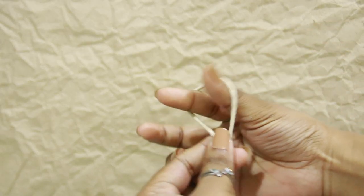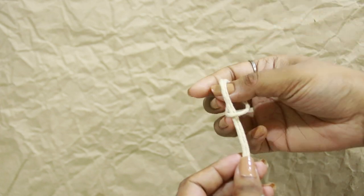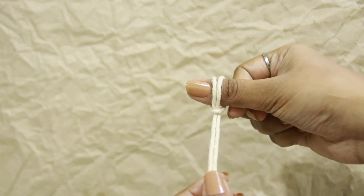In another faster method, find your center loop and fold it over and you have your lark's head knot.